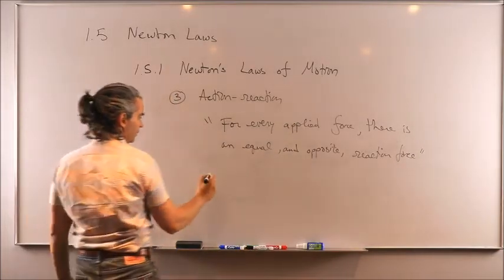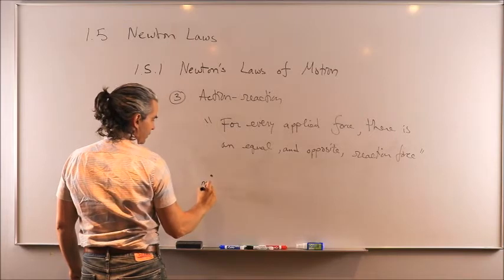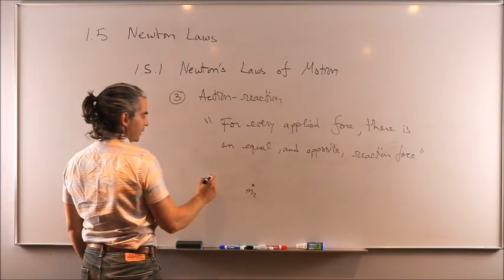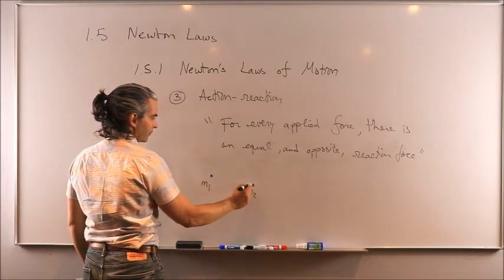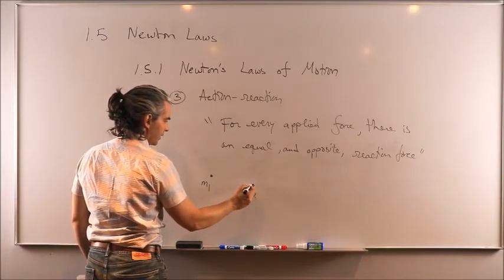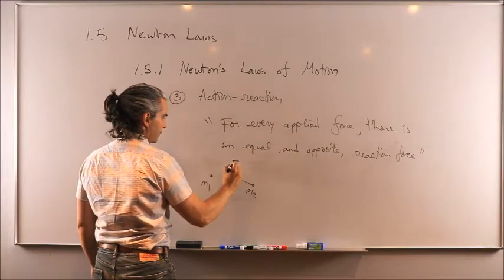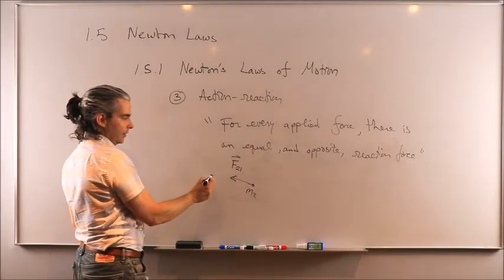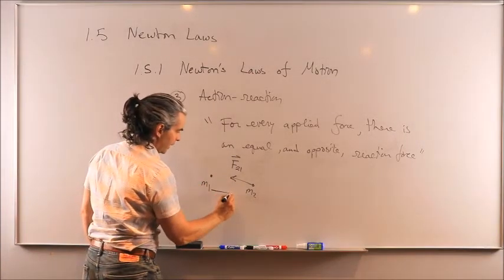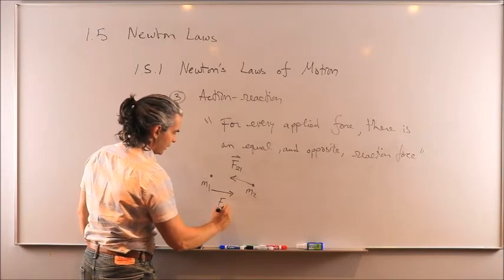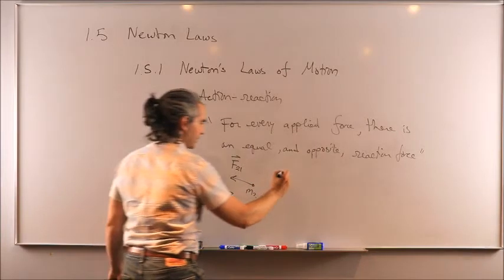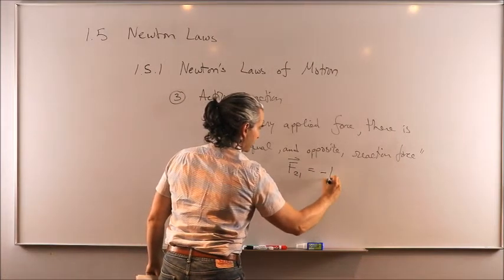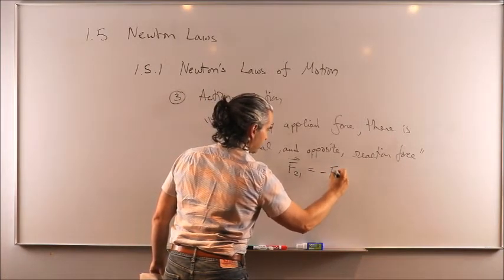Okay, so if you have a particle, say m1, and a particle m2 over there, if m1 exerts a force on m2, say it's pulling on m2 like that with F_21, well then m2 will also exert a force on m1 of equal magnitude but in opposite direction, F_12. All this to say that if F_21 is the action, you're going to get a reaction in the opposite direction like that.